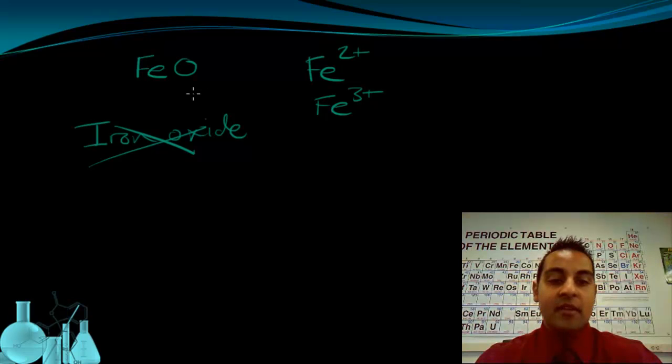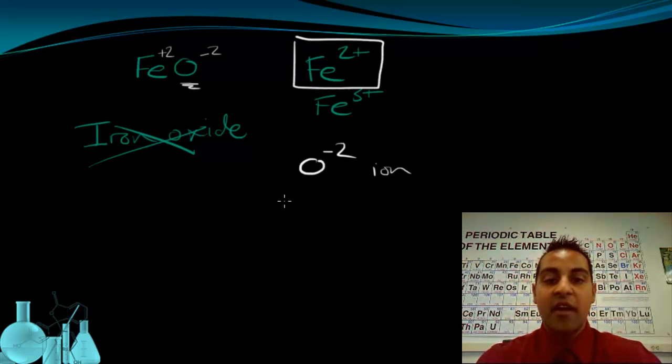And the way we can think about it is by examining the oxygen. We know that because oxygen has 6 valence electrons, oxygen is going to form a 2- ion. We also know that a compound overall has to be neutral. So if the oxygen in this compound is a -2, then the iron must be a +2 to balance it out. So we know we must have this type of iron.